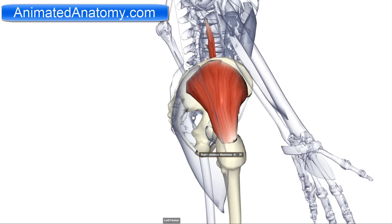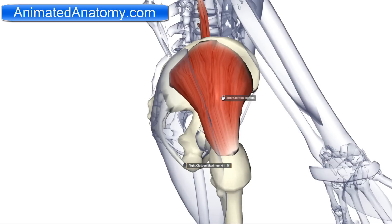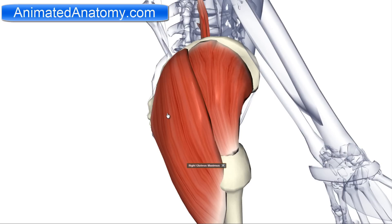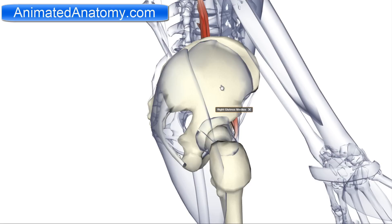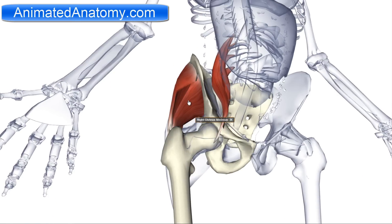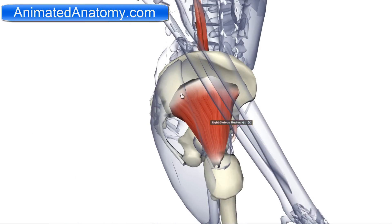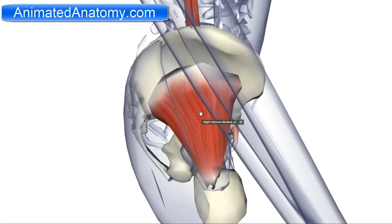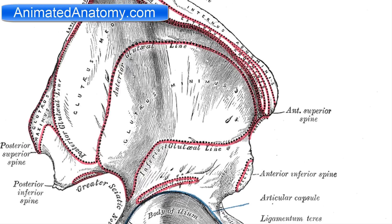This muscle is innervated by the superior gluteal nerve. As you can remember, the gluteus maximus was innervated by the inferior gluteal nerve. Now there is also one more gluteus muscle and it's right underneath our gluteus medius. If I remove the gluteus medius here we can see the gluteus minimus muscle. The gluteus minimus muscle has the same origin from the ilium but this time a little bit lower. Here arises the gluteus minimus underneath the gluteus medius. The insertion of the gluteus minimus muscle is also the greater trochanter of the femur.